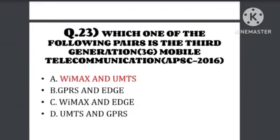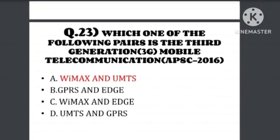Question number 23: Which one of the following pairs is the third generation mobile telecommunication? The answer is WiMAX and UMTS — these represent the third generation (3G) mobile telecommunication pair.